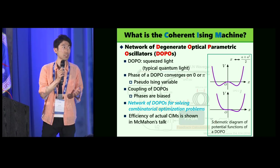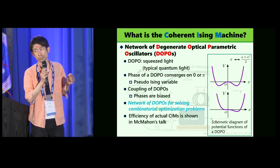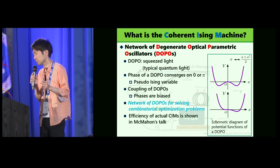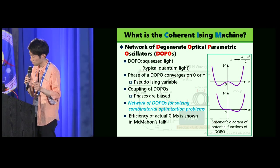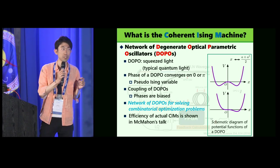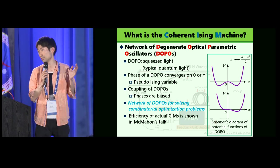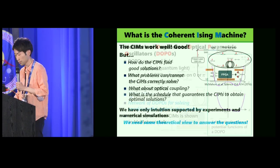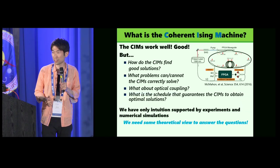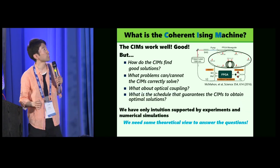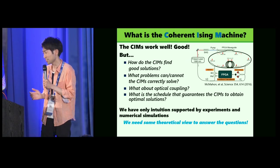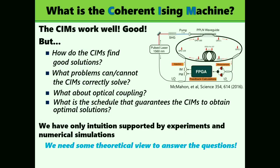The CIM is a network of DOPOs for solving optimization programs. Efficiency of the actual CIMs is shown in previous Mahon's talks. So you know that the CIMs work well. Anyway, at least work well, good, excellent, but we have naive questions.